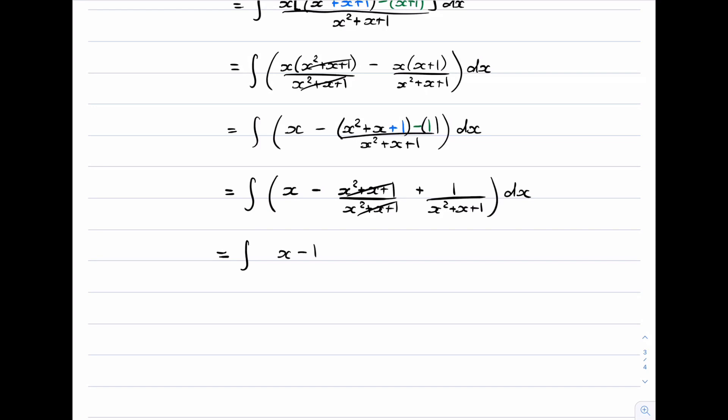So we get x minus 1 plus this fraction 1 over x squared plus x plus 1. And so now we've turned our original integrand into something which doesn't have a fraction with a numerator greater than denominator. And we know how to integrate each of these three terms.